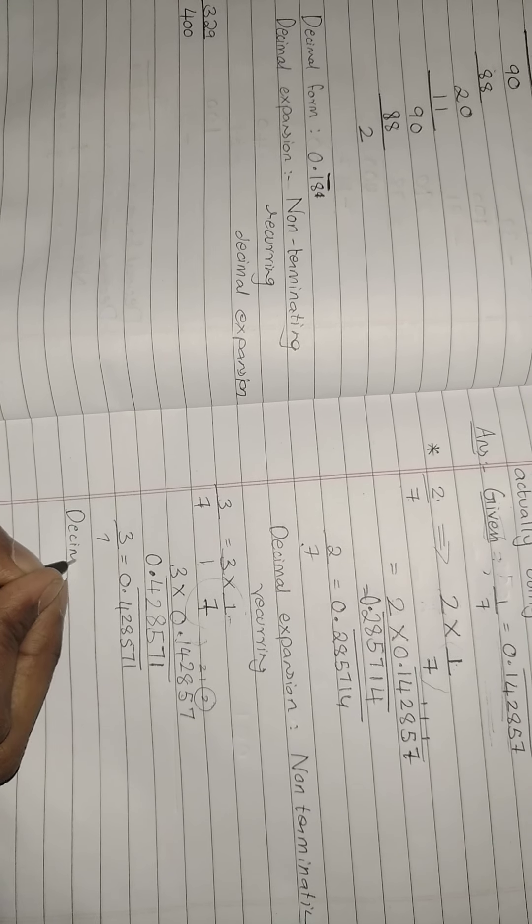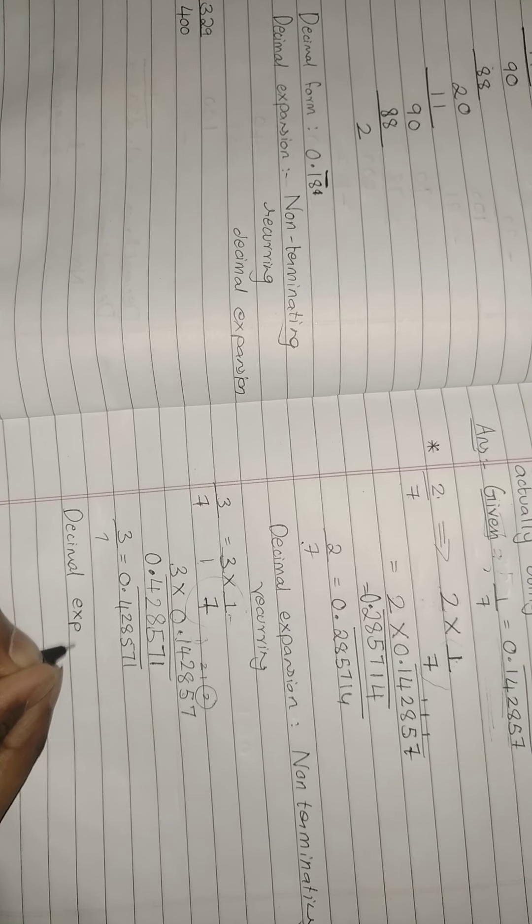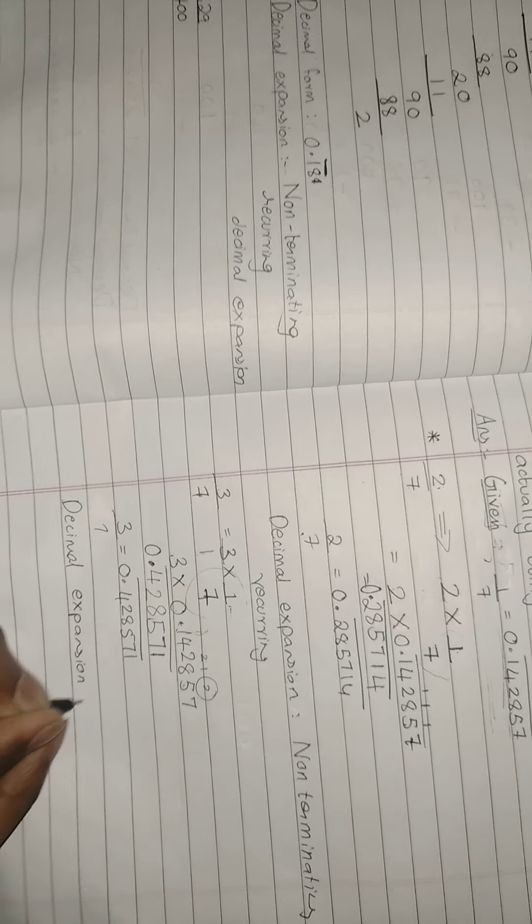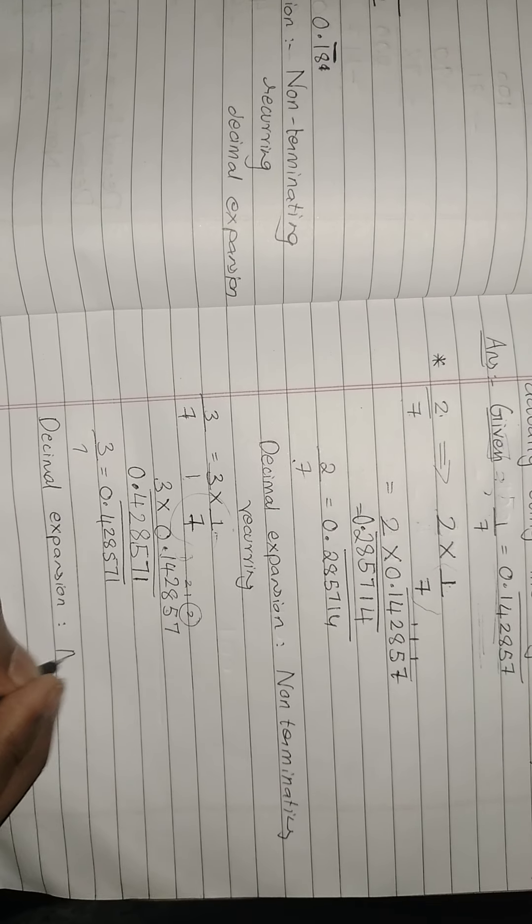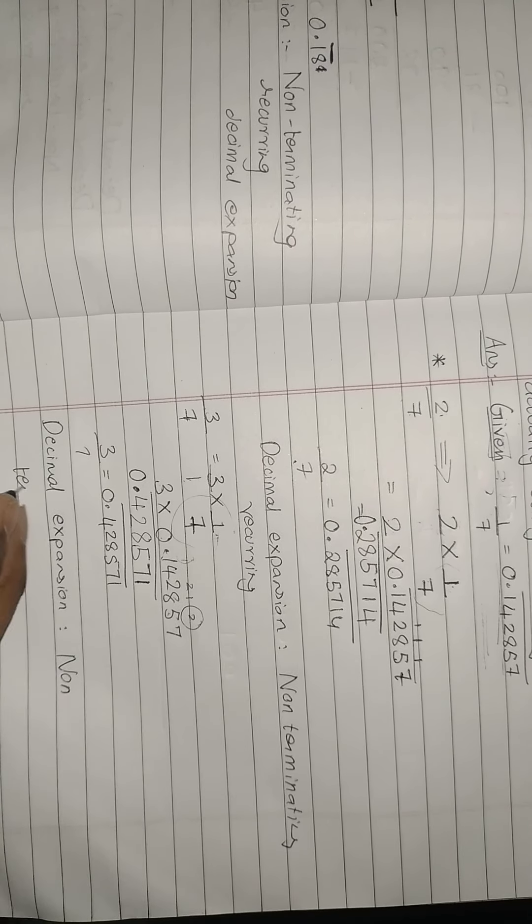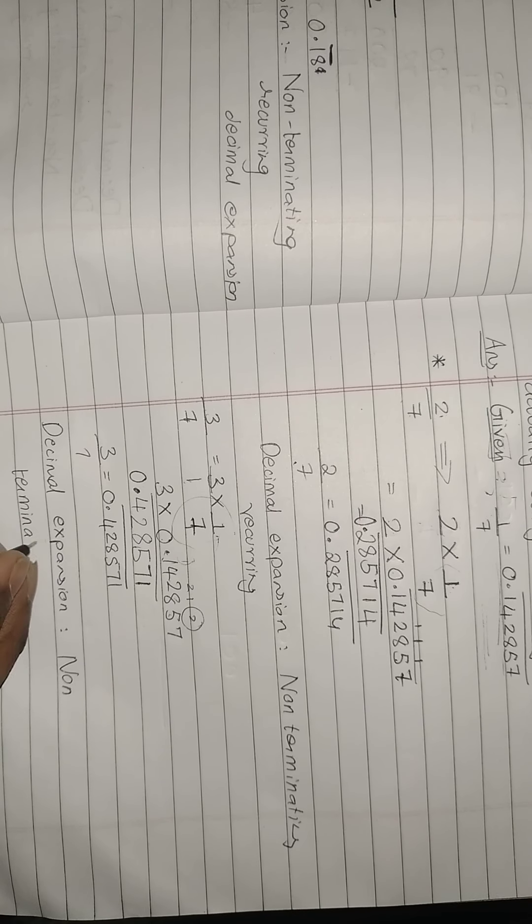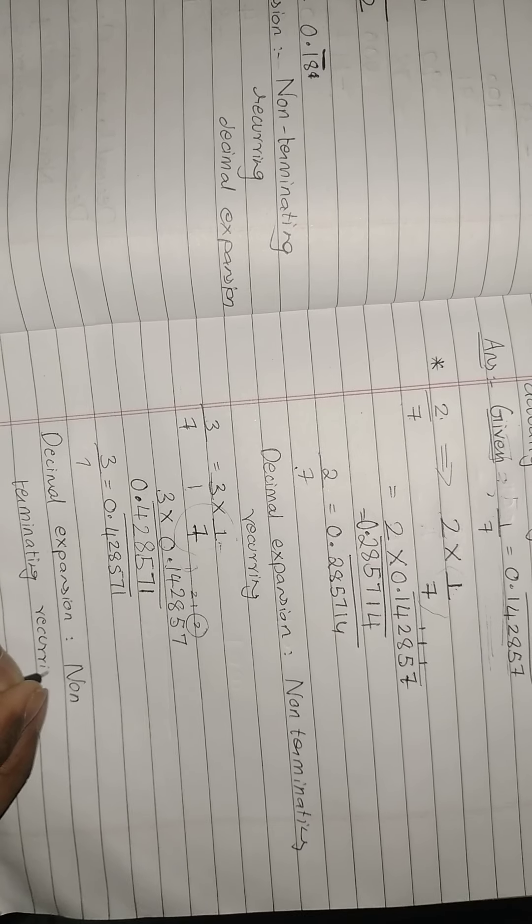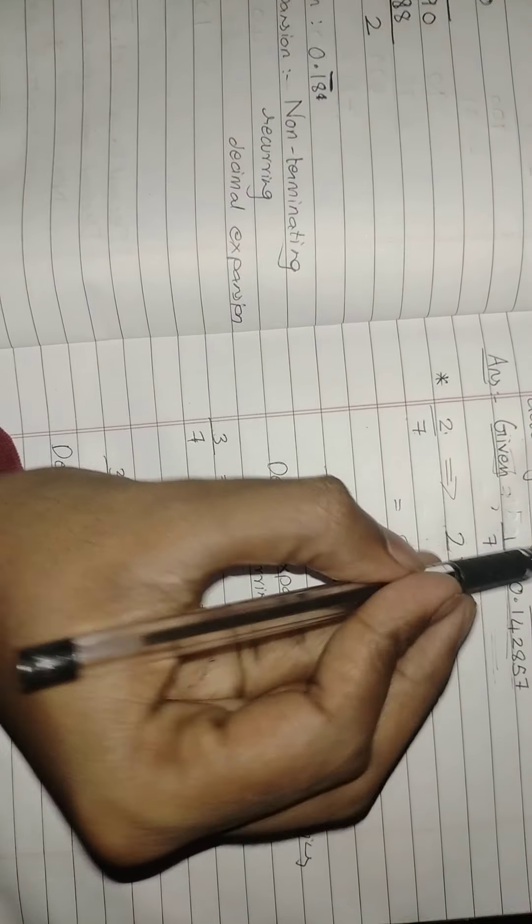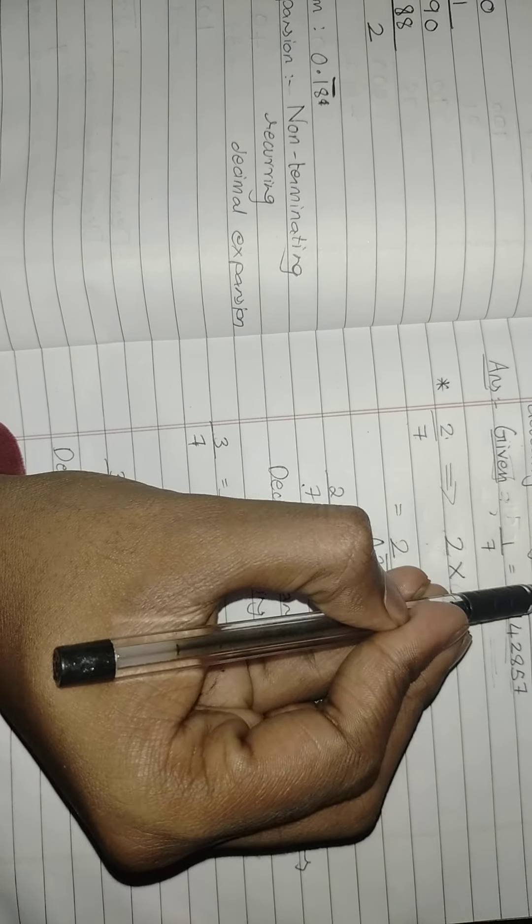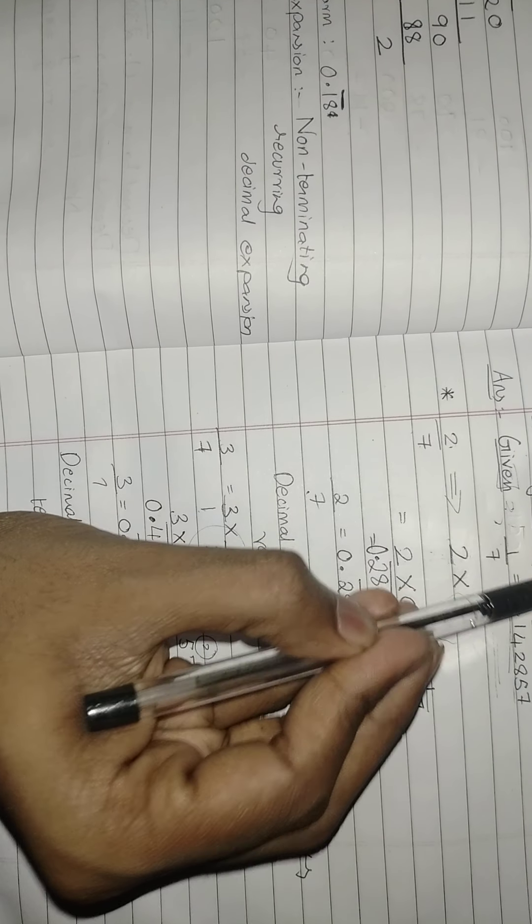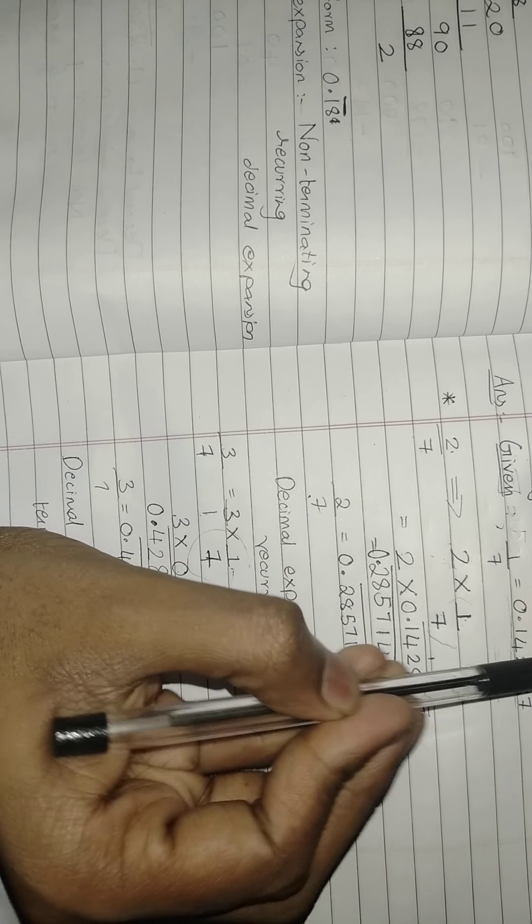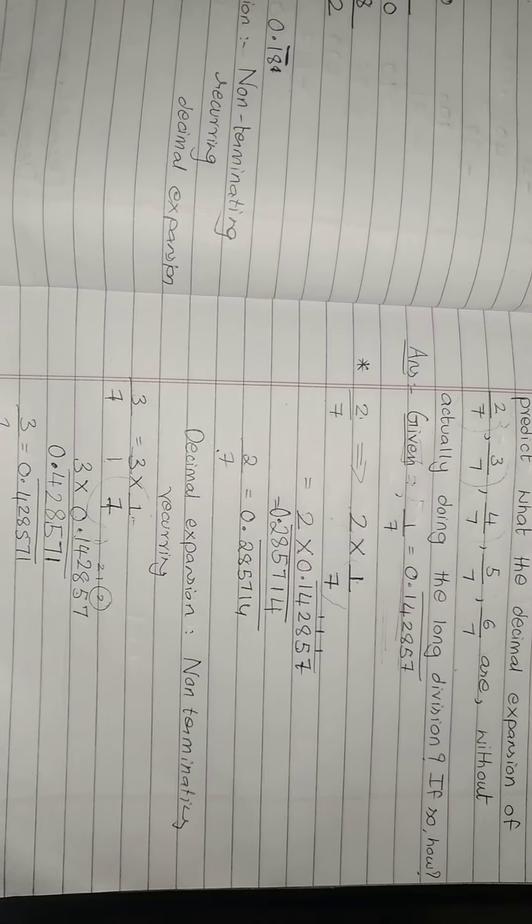So I can say decimal expansion as what? It is non-terminating recurring. Always, if it is recurring, means it is non-terminating. Similarly, find 4 by 7 and 5 by 7 and 6 by 7 by this technique. 4 into 1 by 7, 5 into 1 by 7 and 6 into 1 by 7 as a homework, everyone.